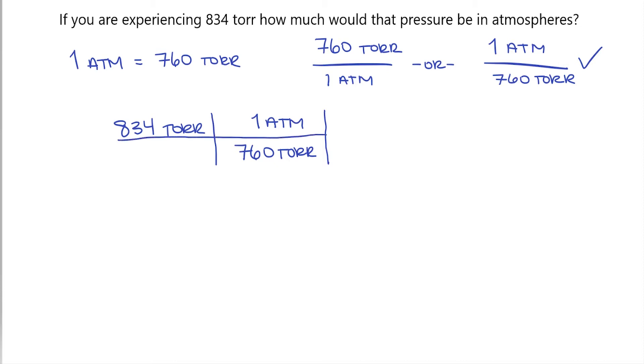Now to solve this, we need to multiply our top numbers and units together to create one number. And our bottom numbers will all be multiplied together to create one number as well. So 834 times 1 is still just 834. Now this was torr and this was atmospheres. So I will place torr times atmospheres. On the bottom, all I have is 760 torr.